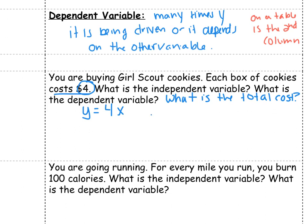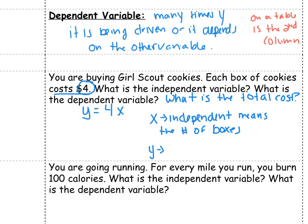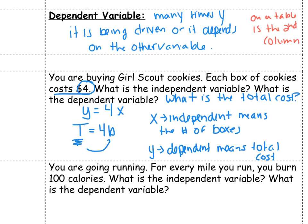So X is the independent, and it means the number of boxes. And Y is the dependent, and it means total cost. We didn't have to use X and Y — like we've talked about in class, we could have used T for total cost and B for number of boxes. But the total cost depends on how many boxes we buy.